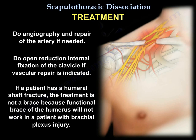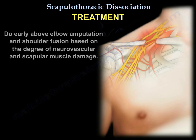If a patient with scapulothoracic dissociation has a humeral shaft fracture, the treatment is not a brace. A functional brace of the humerus will not work in a patient with a brachial plexus injury. Early above-elbow amputation and shoulder fusion should be considered based on the degree of neurovascular and scapular muscle damage.